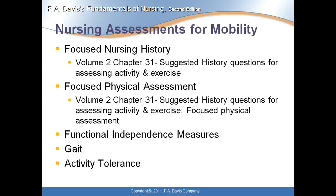For nursing assessments of mobility, you can do a focused nursing history found in your volume two book, chapter 31, with suggested history questions for assessing activity and exercise. A focused physical assessment covers health history questions and assesses activities, exercises, skin breakdown, range of motion, pushes, pulls, and grips. Functional independent measures assess whether your patient can get out of bed, walk to the bathroom, and perform similar tasks — if they can't, they can't safely go home. If an elderly patient can't do what they could at home, order physical therapy as soon as possible, because the longer you lay in bed, the weaker you get.